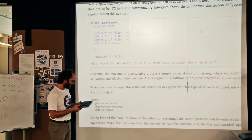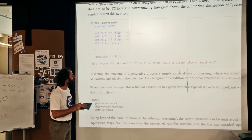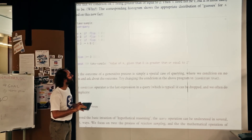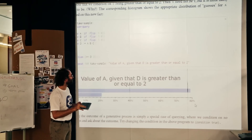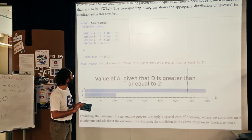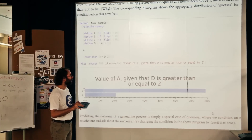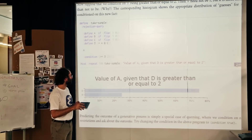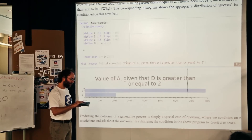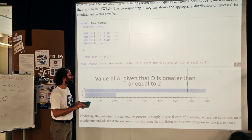They actually let you run that. So here's the distribution: the value of A given that D is greater than or equal to 2. You can run it over and over and see how the distribution varies. Of course, if you put in a large number of samples, you're going to converge.